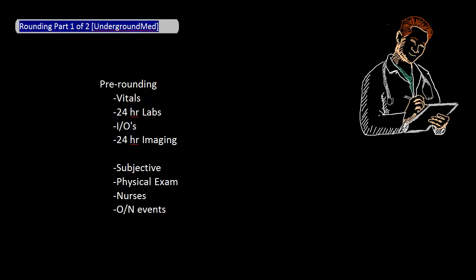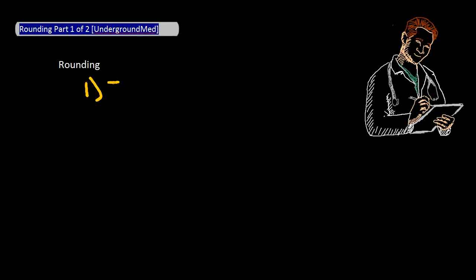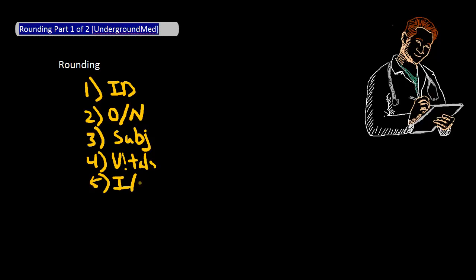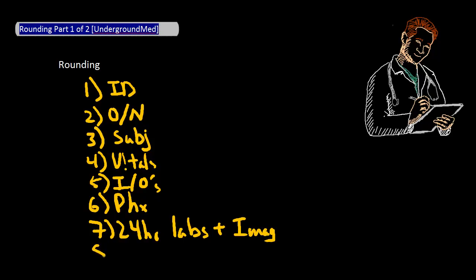The presentation is generally given in the following order, in which patient ID is talked about first, followed by the overnight events, followed by how the patient is feeling this morning (aka the subjective), then by vital signs, followed by I's and O's (or ins and outs), then by the physical exam, then by 24-hour recent labs as well as imaging, and lastly by your assessment and plan of the patient.